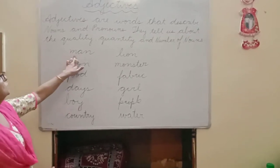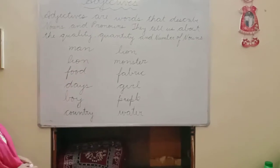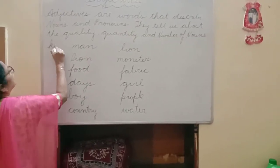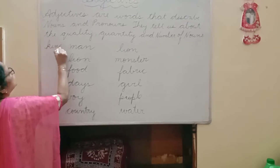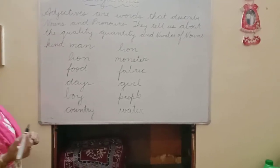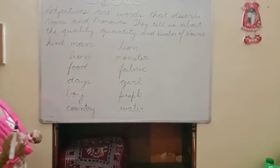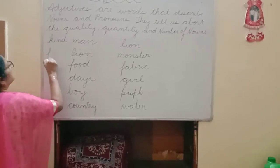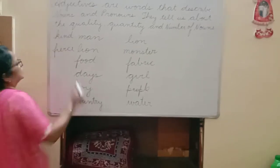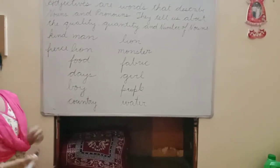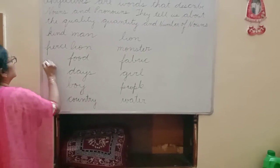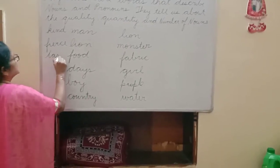Now here we have the word 'man'. What can we add to man? We can say 'kind man'. The next one is 'lion'. What can we add to describe a lion? We can add 'fierce' — fierce lion. Then we have 'food': delicious food, tasty food, hot food — it can be anything. So I am going to write here 'tasty'.